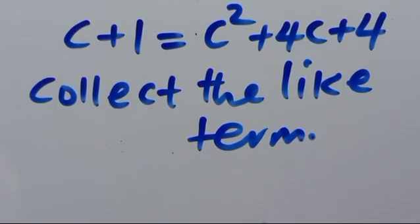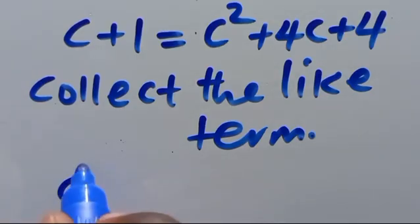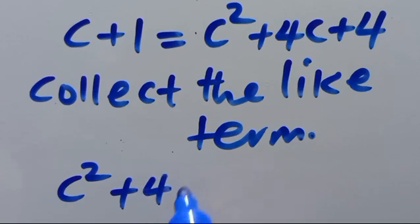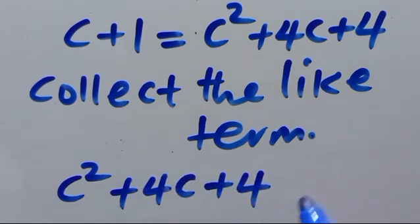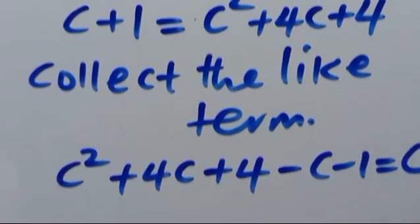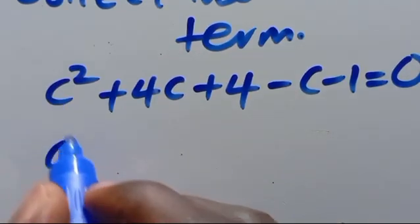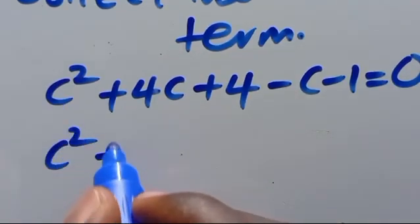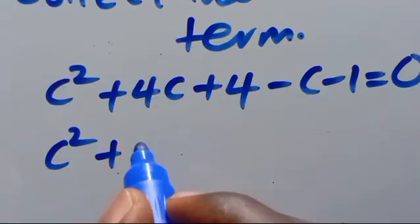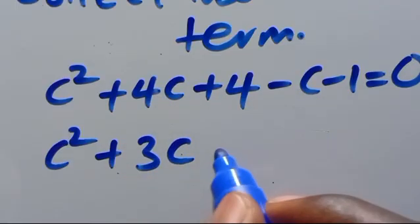Collecting all terms to one side, we have c² + 4c + 4 − c − 1 equals zero, which simplifies to c² + 3c + 3 equals zero.